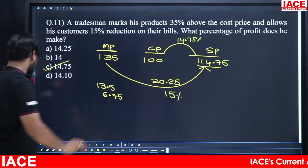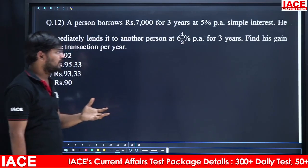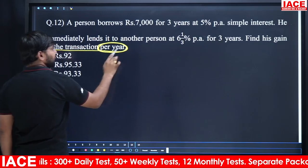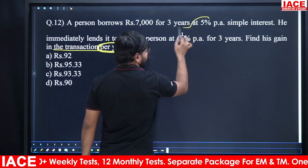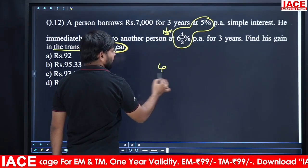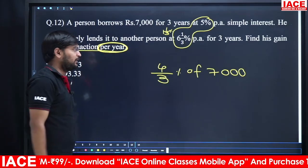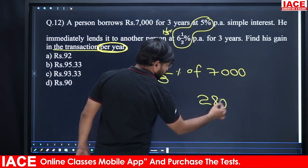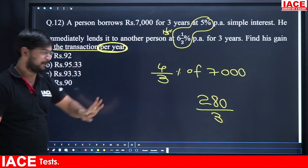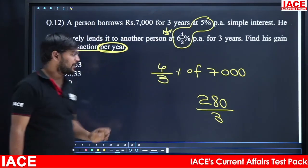A person borrows 7,000 for 3 years at 5% per annum simple interest and lends it at 6⅓% per annum. They are asking for gain per year. Borrowing at 5%, lending at 6⅓%, so profit per year = 4/3%. On 7,000: 7,000 × 4/3 ÷ 100 = 280/3 = 93.33. Answer is 93.33.